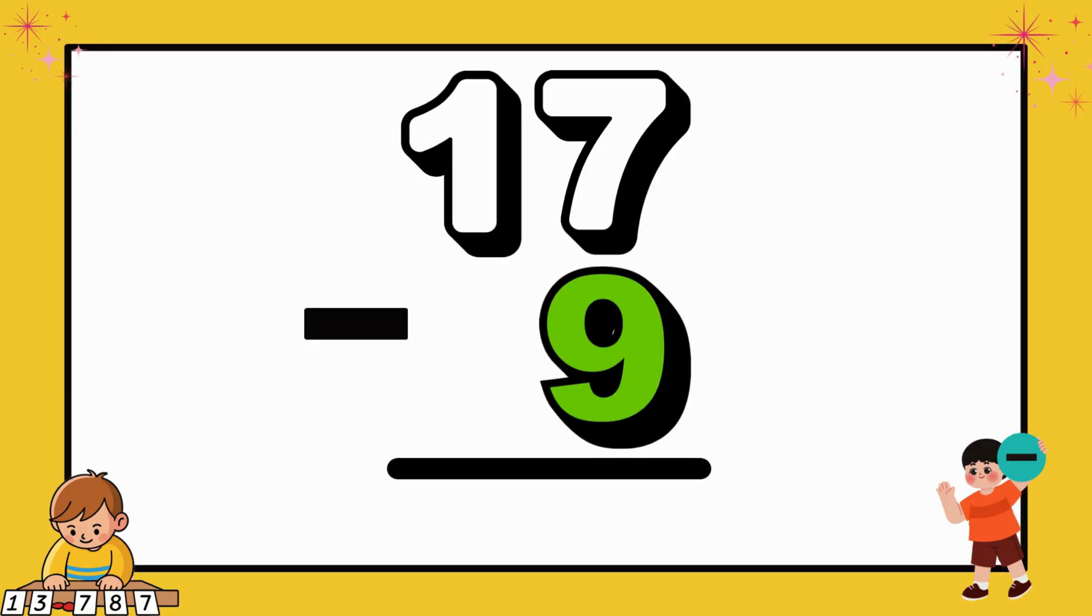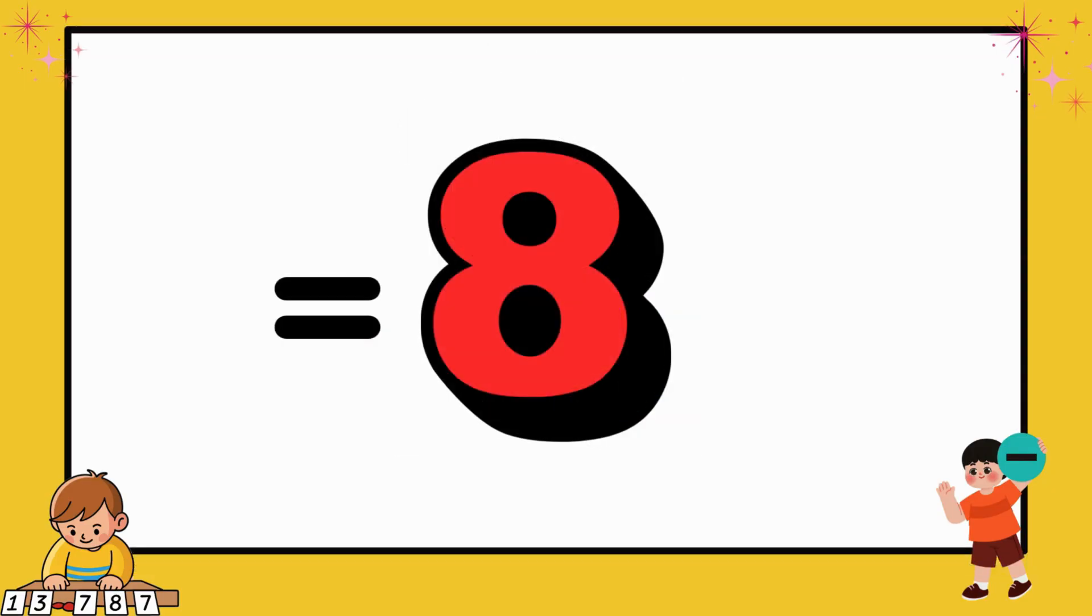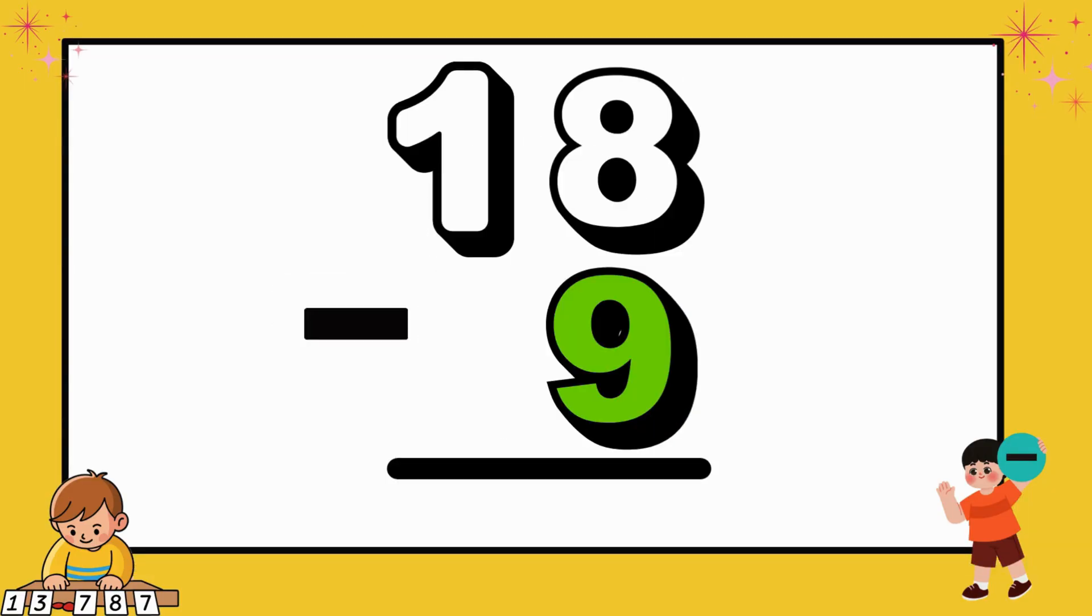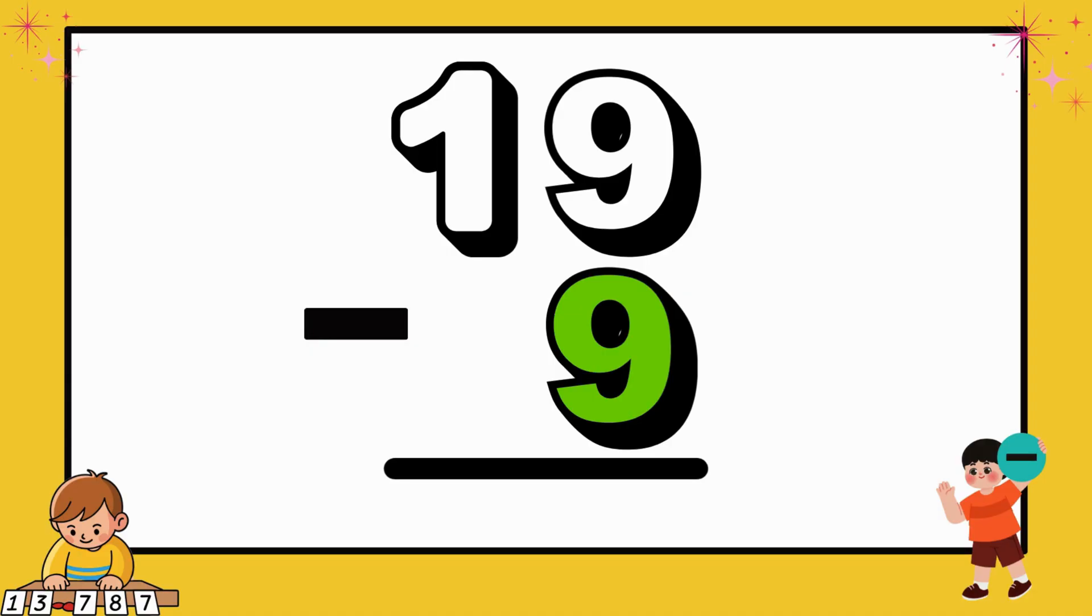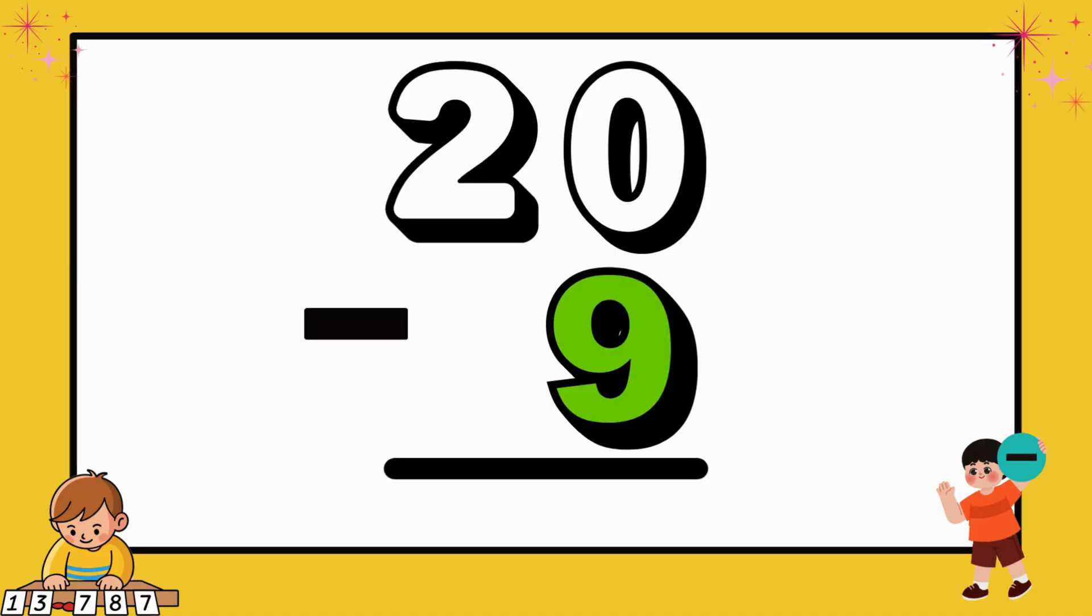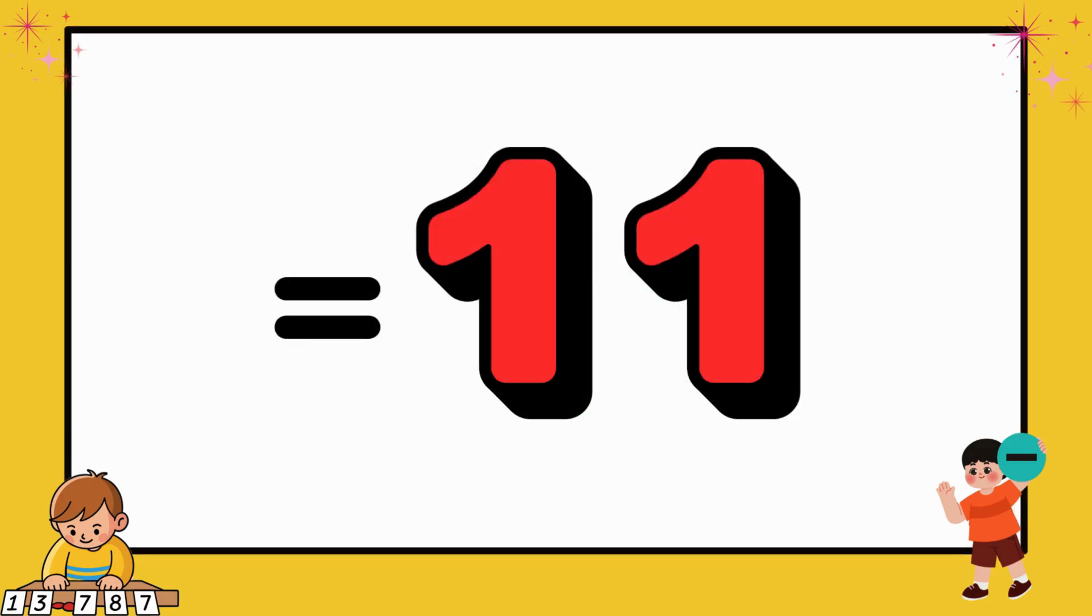Following that, 17 minus 9 equals 8. Also, 18 minus 9 equals 9. Then, we have 19 minus 9 equals 10. Finally, 20 minus 9 equals 11.